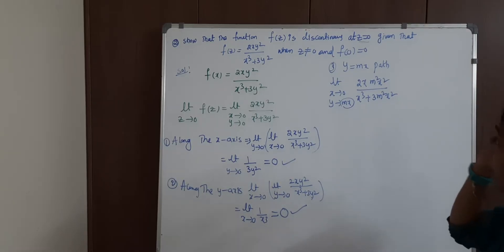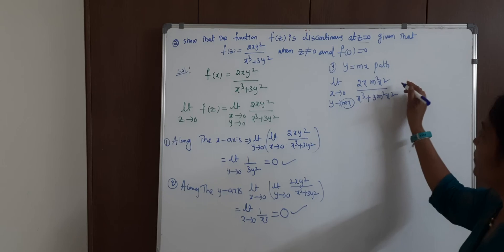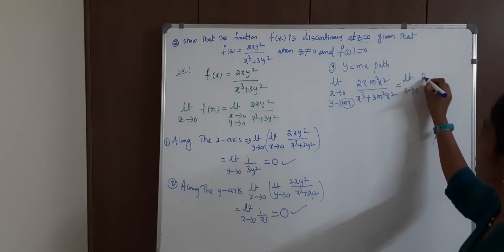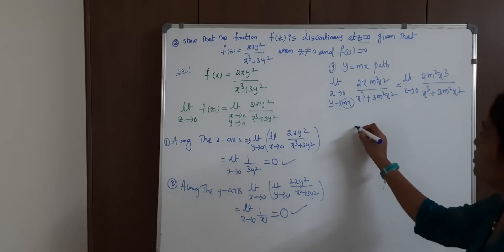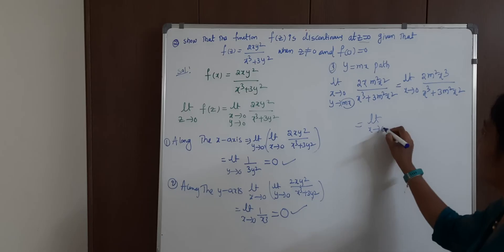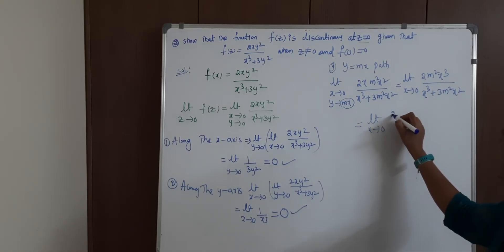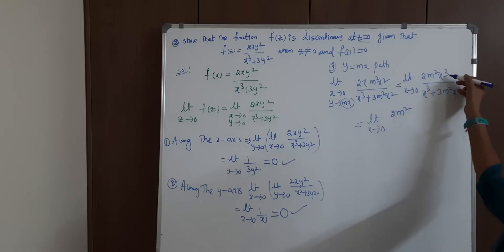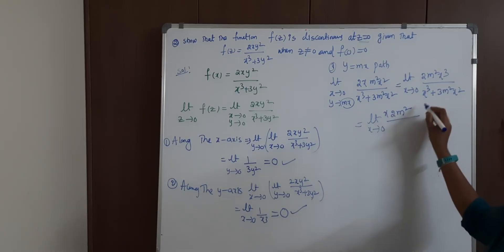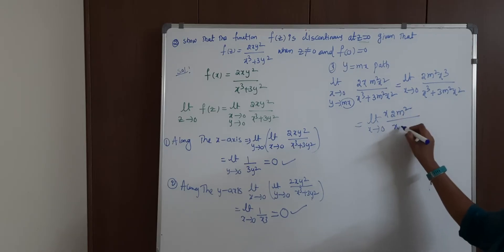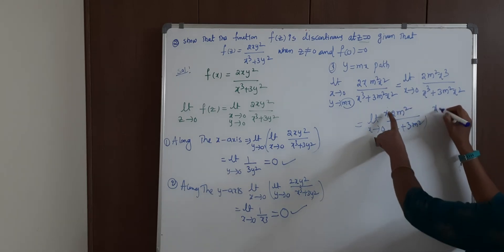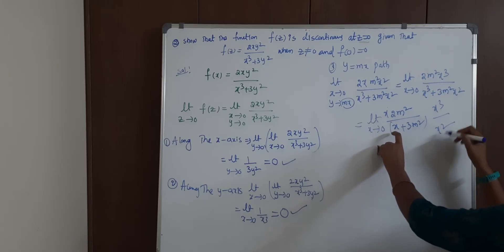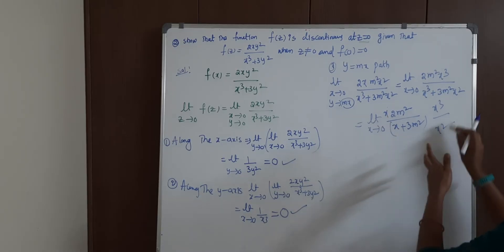See, from the numerator and denominator, x→0, 2m²x³ / (x³ + 3m²x²). From numerator, common the x term. From denominator, x³, x² common. When x² is common, 2m²x remains. When x² common from denominator and x cube from numerator, or x cube common from numerator and x square common from denominator, x gets canceled leaving x remaining.